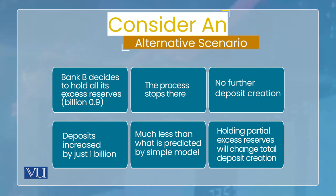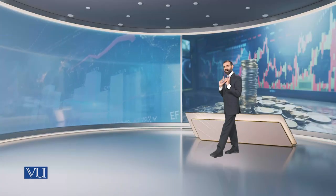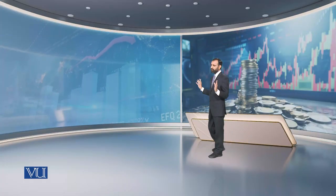So how much did total deposits increase? Just 1 billion rupees. This means the central bank created 1 billion in reserves and only 1 billion in deposits were created — that's it. Compare this to the simple example where 10 billion deposits were being created — here only 1 billion deposits were created. Why? Because our assumption about excess reserves changed — banks can also hold excess reserves.